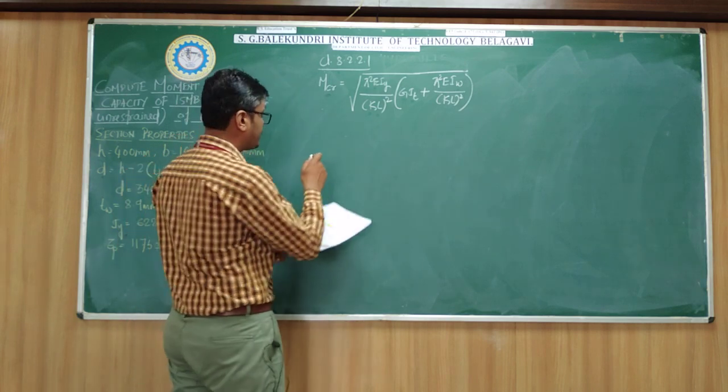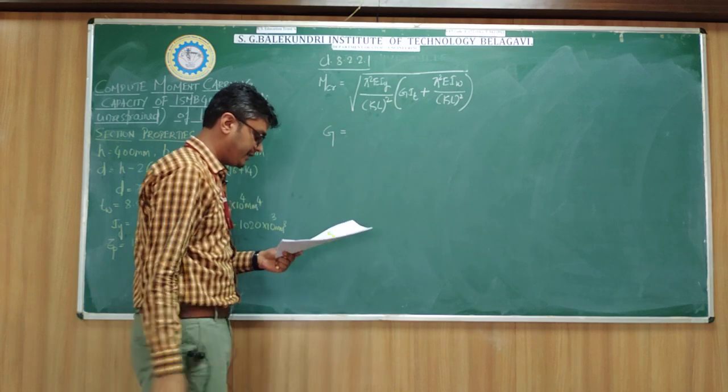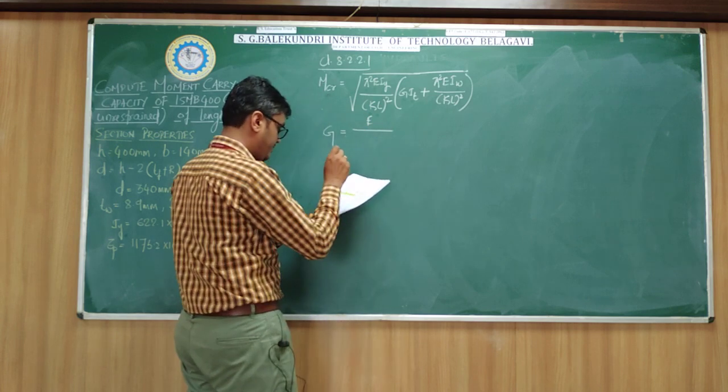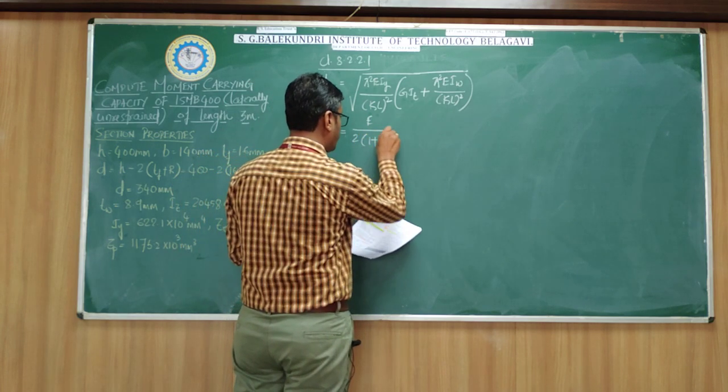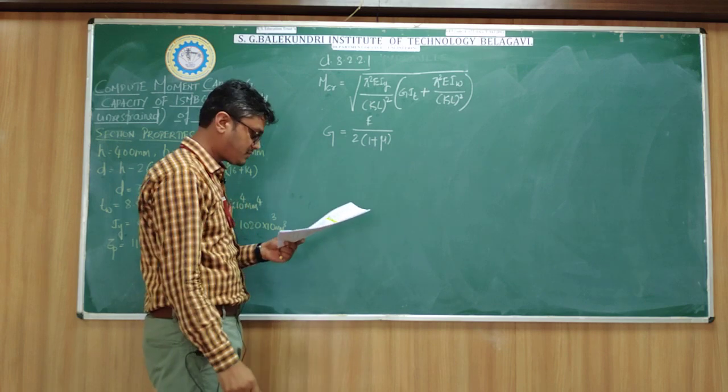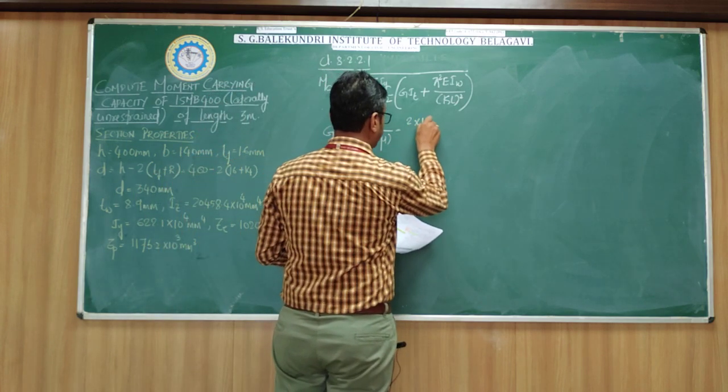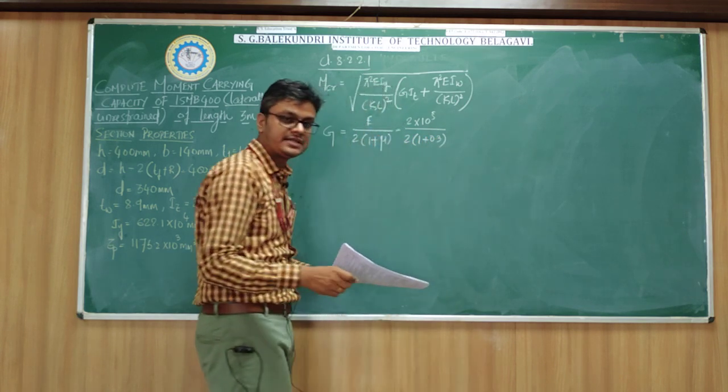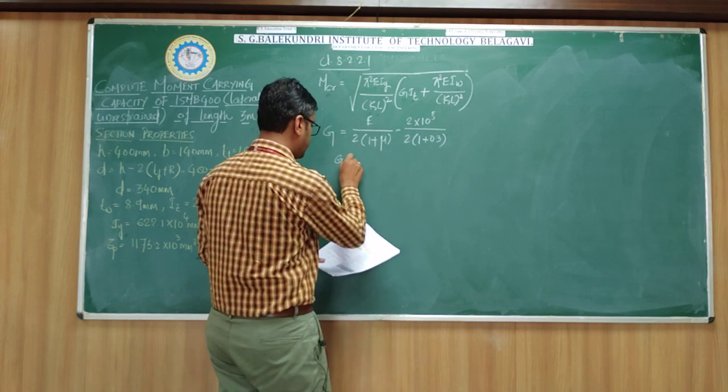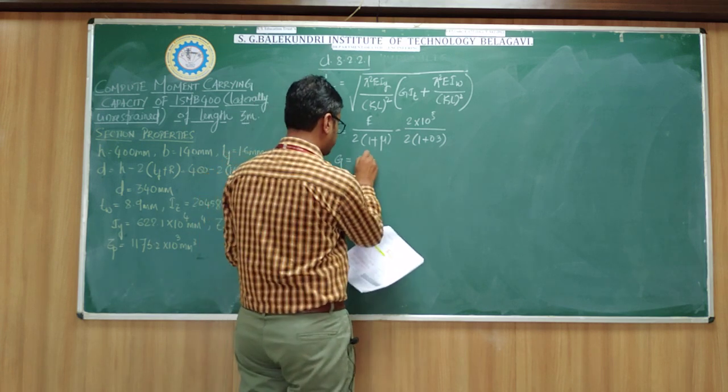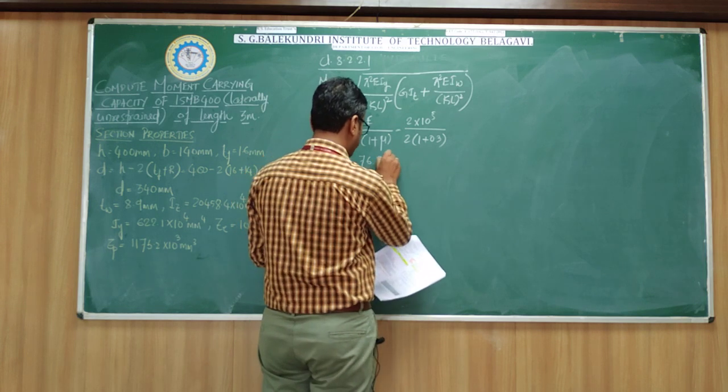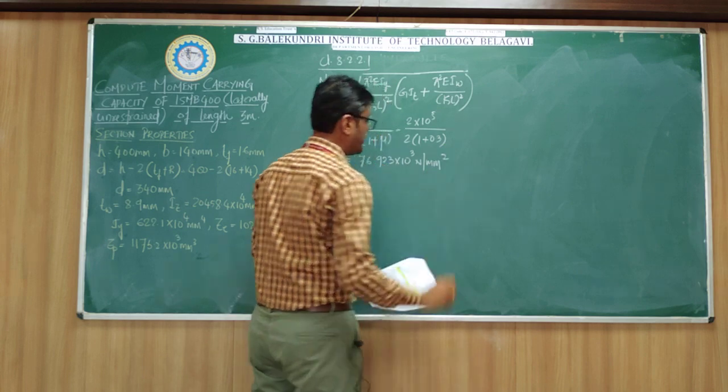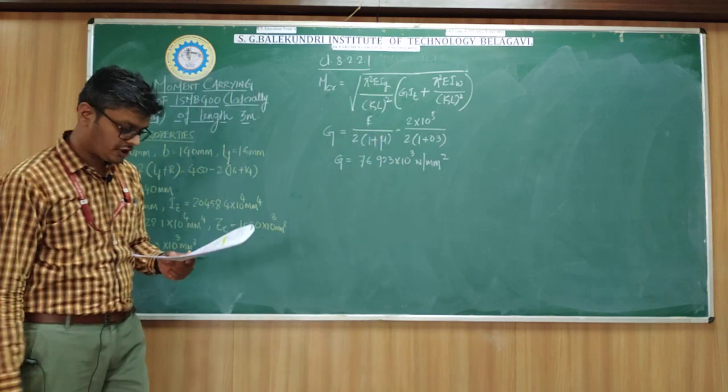First let me find out G, which is the shear modulus, given as E/(2(1+μ)). So E is 2×10⁵, divided by 2(1+0.3), where μ is the Poisson's ratio. So this G I am getting as 76.923×10³ N/mm². This is the shear modulus.